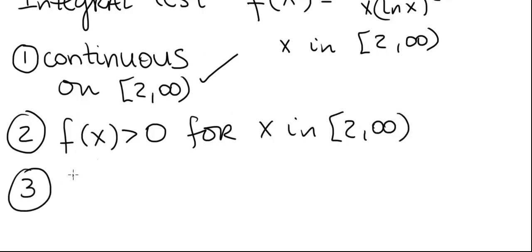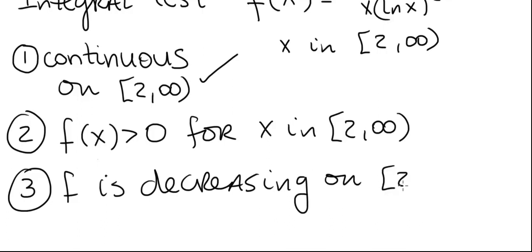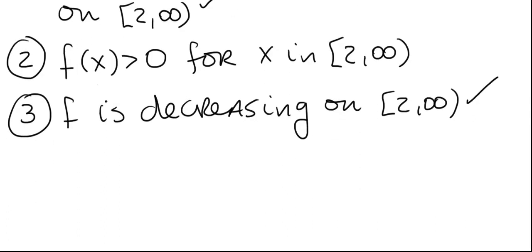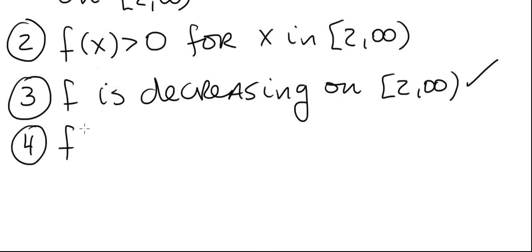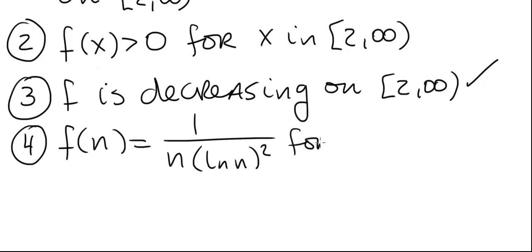The third condition is that f is decreasing on the interval 2 to infinity. We do not have to take the derivative because the numerator is always 1 and the denominator gets larger and larger as x gets larger, so 1 divided by bigger and bigger numbers yields smaller and smaller numbers — the function is decreasing. The fourth condition is already satisfied by the way we selected this function: when we plug in n for x we get 1 divided by n times natural log of n squared, for n equals 2, 3, 4, 5, and so on. All four conditions have been met.